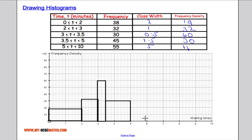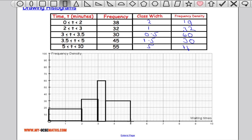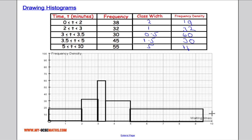And between 5 and 10 we have a frequency density of 11. A frequency density of 11, which is, that's a little bit too high. Let's just try that one again. Between 5 and 10 we have a frequency density of 11.